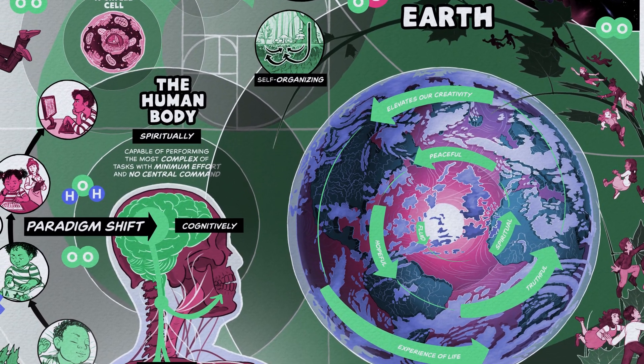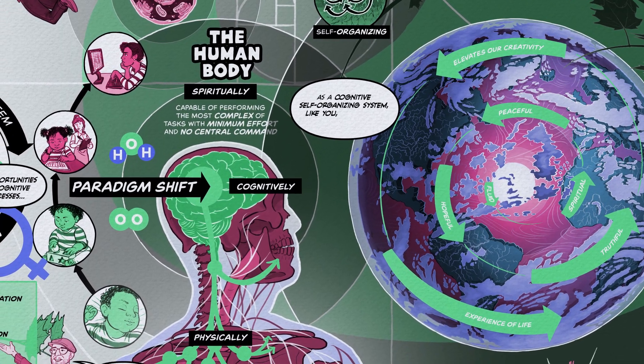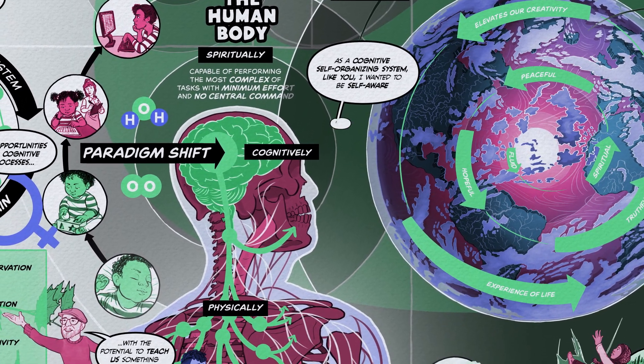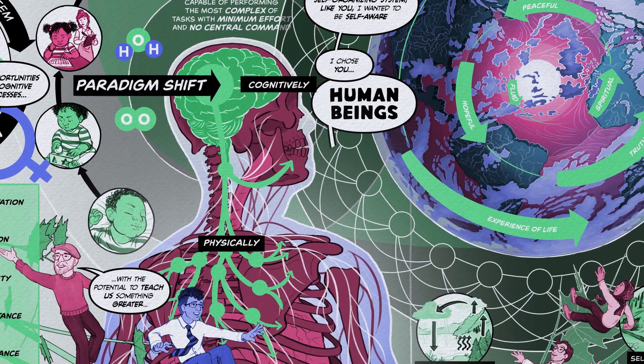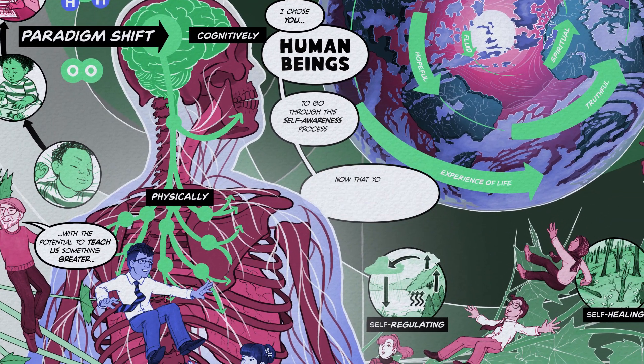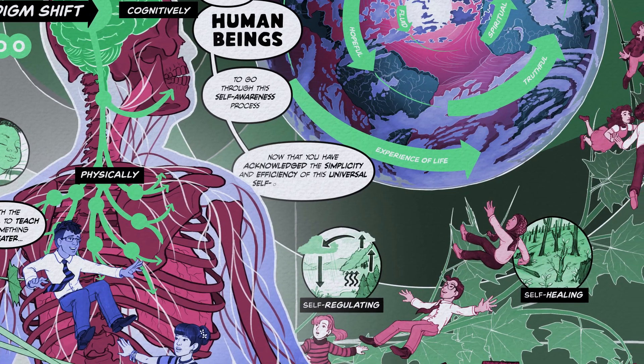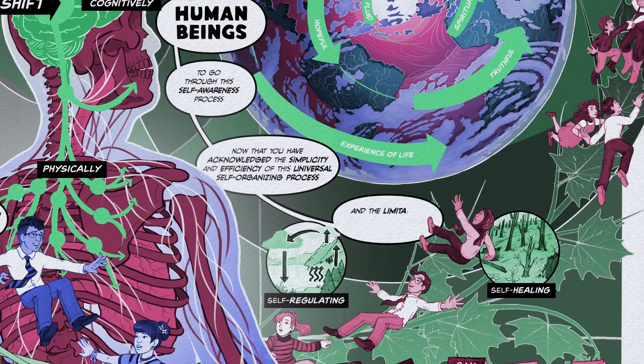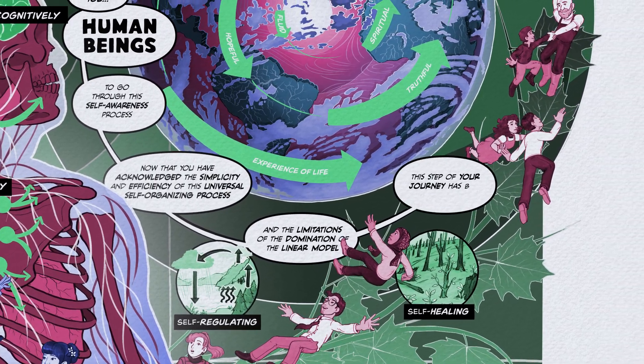Our planet Earth is telling us, as a cognitive self-organizing system like you, I wanted to become self-aware and I chose you, human beings, the hub of the Earth network, to go through this self-awareness process. Now that you have acknowledged the simplicity and efficiency of this universal self-organizing process and the limitations of the domination of the linear model, this step of your journey has been achieved.